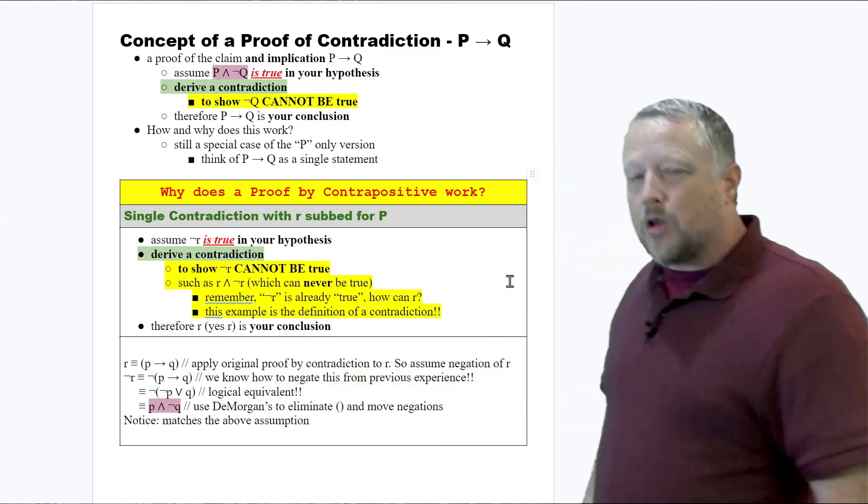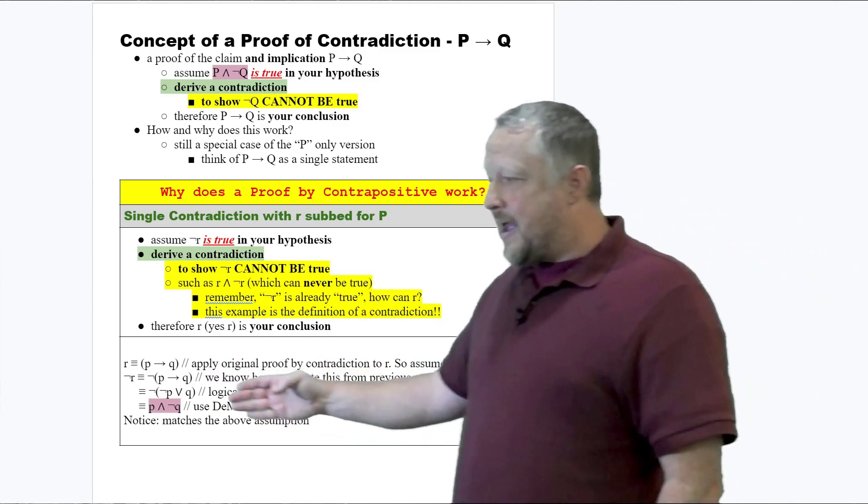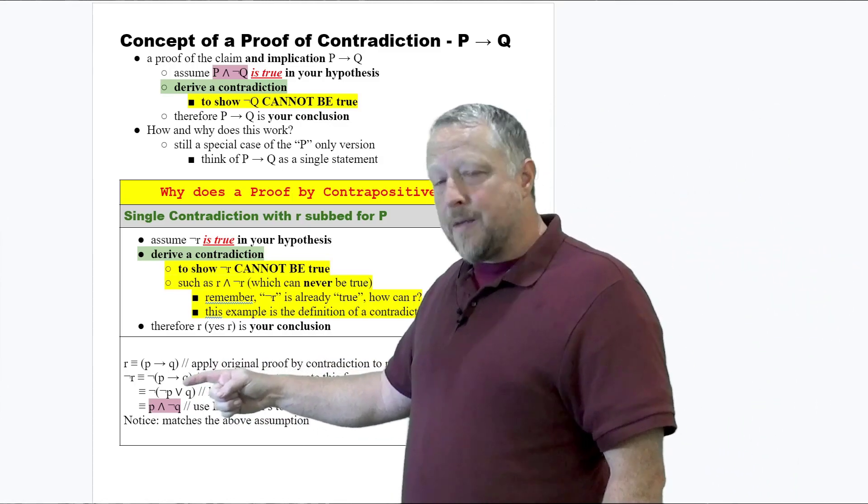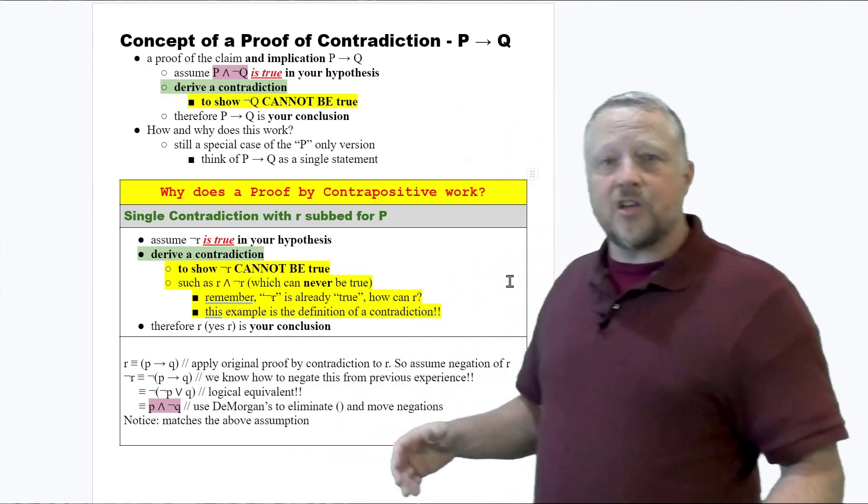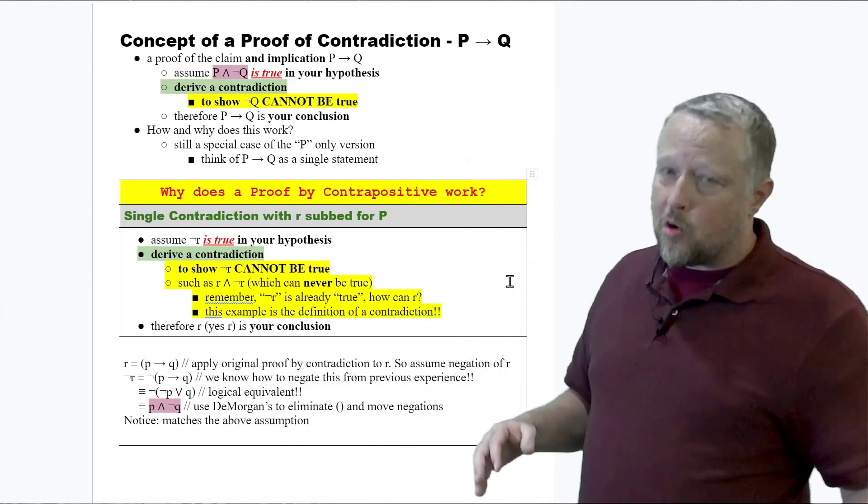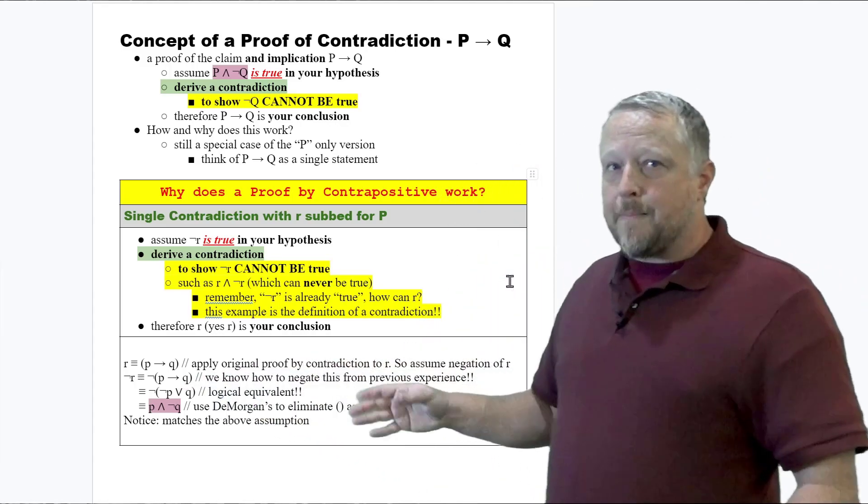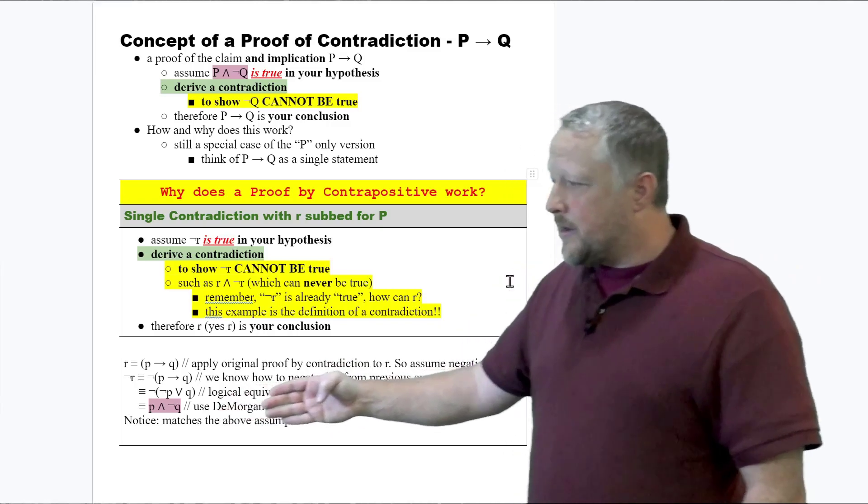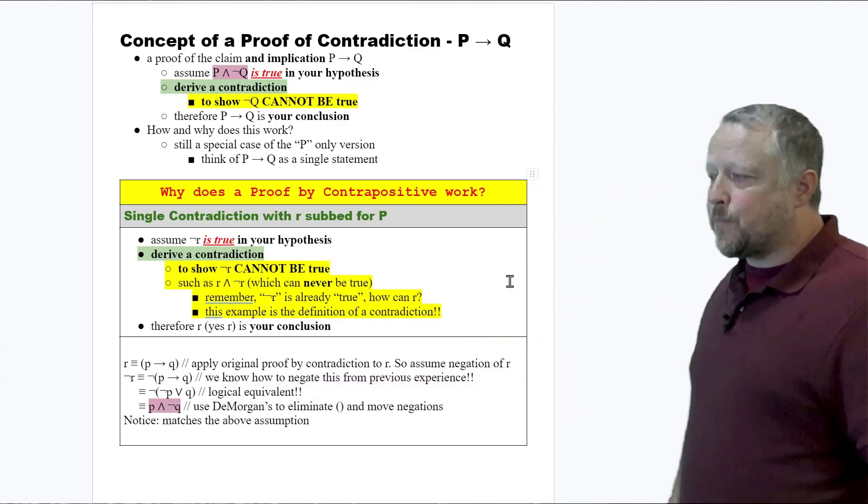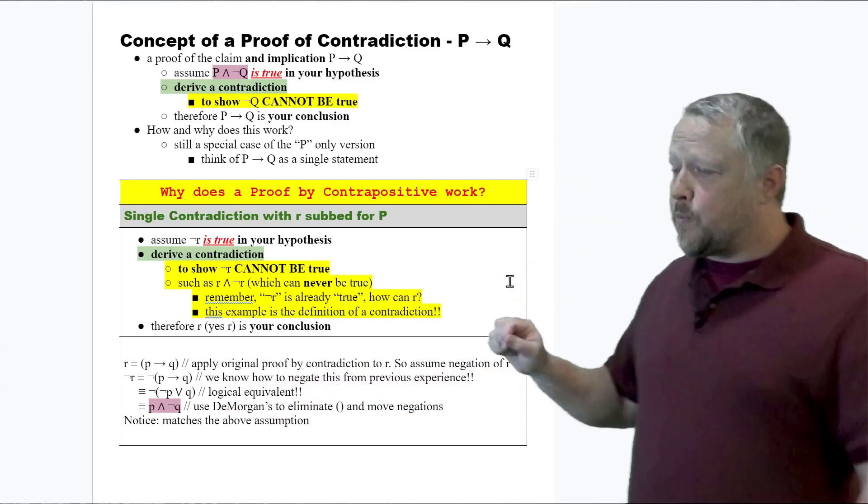I can use our logical equivalents to go ahead and break that down from an implication to using some type of connectives, which in this case happens to be an or, but we have our negation here. There's nothing wrong with that, because now using DeMorgan's, I can go ahead and eliminate the parentheses and move our negations. And when we do DeMorgan's, remember,